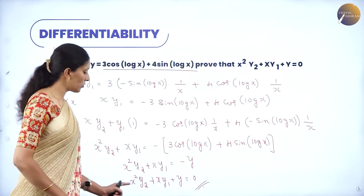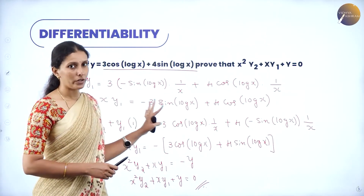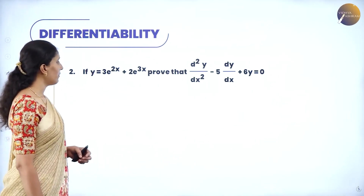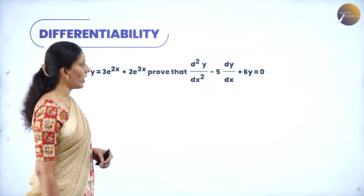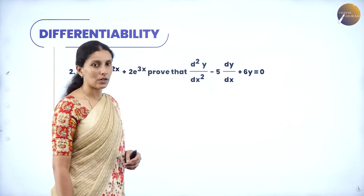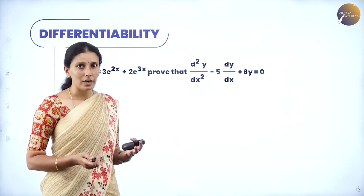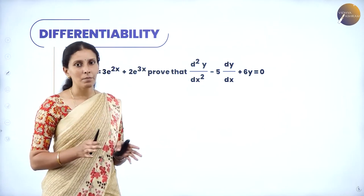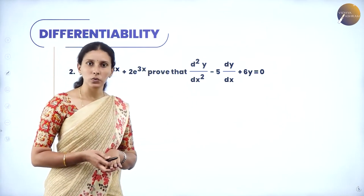So this is how you prove equations containing the second order derivative. This is a 5-mark question which may be asked in your examination. Let us take a few more problems. Second problem: if y = 3e^(2x) + 2e^(3x), prove that d²y/dx² − 5(dy/dx) + 6y = 0. The equation can be given in any form — using y1, y2 or d²y/dx² with dy/dx. Just find the second and first order derivatives, substitute, and prove the result.